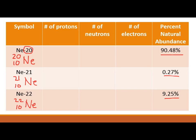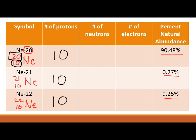The number written with the element name is the mass number; the atomic number you'd look up if not given. All three neon isotopes have 10 protons because they're all neon. For neutrons: neon-20 has 20 minus 10 equals 10 neutrons; neon-21 has 21 minus 10 equals 11 neutrons; neon-22 has 22 minus 10 equals 12 neutrons.